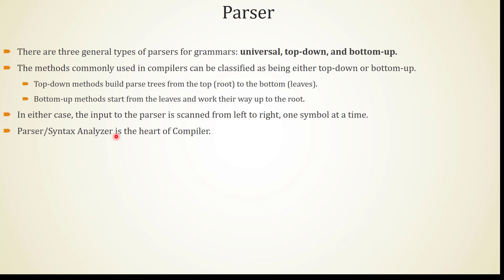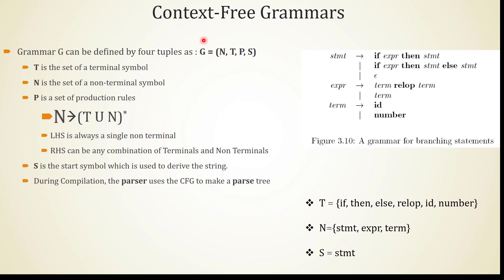Next, we are going to see context-free grammars. We already heard about these in formal language and automata theory. In the previous video, we discussed the definition of grammar, which contains non-terminals, terminals, productions, and a start symbol. In context-free grammars, the production will be in the form: a non-terminal produces any combination of terminals and non-terminals.